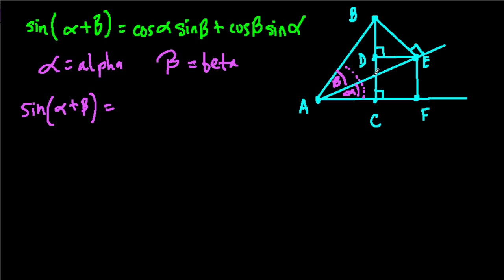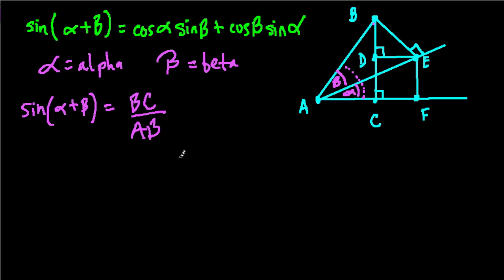I don't want to clutter this diagram up any more. That equals BC over AB — opposite over hypotenuse. This is a right triangle; we have a straight line here with a 90-degree angle, so this angle is 90 degrees as well. So the sine of alpha plus beta equals BC over AB, and that gets us started.